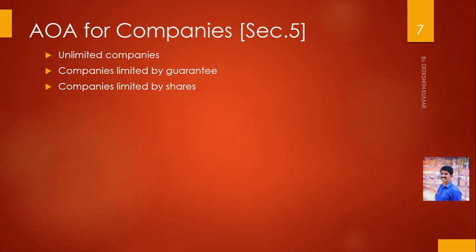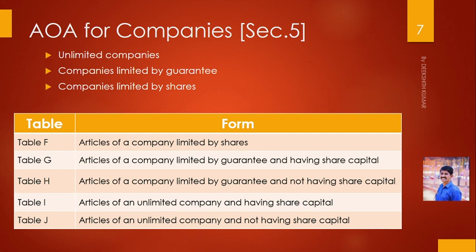Articles of association for companies — these articles of association are not compulsory for all companies. The following types of companies may adopt the applicable articles under Schedule 1: unlimited companies, company limited by guarantee, and company limited by shares. For each type, different format tables are provided in Schedule 1.